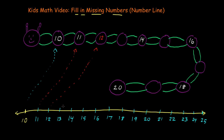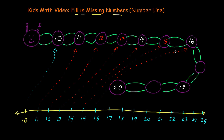And what comes after 12 on the number line? 13. So we can put the number 13 here. And then after 13 comes 14. And after 14 comes 15, right there. And then we already have 16 written here, but let's draw an arrow just for fun anyway — 16, right here. After 16, what comes next? 17. Then 17 comes next after 16. And after 17, what comes next? 18. We already have 18 filled in.